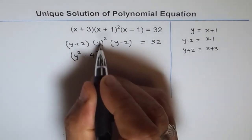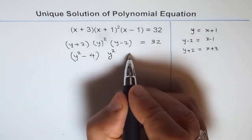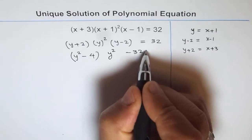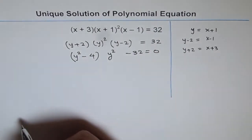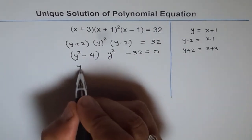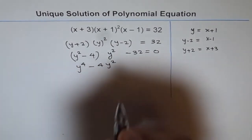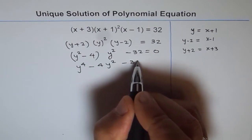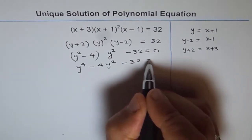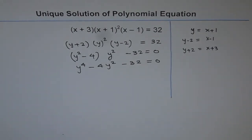So we have (y squared minus 4) times y squared minus 32 equals 0. Opening this bracket we get y to the power of 4 minus 4y squared minus 32 equals 0. It becomes a kind of quadratic equation, which we can factor very easily.